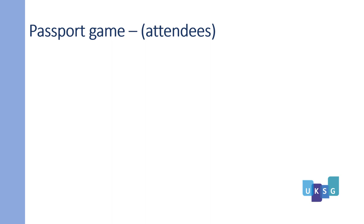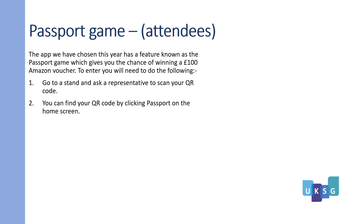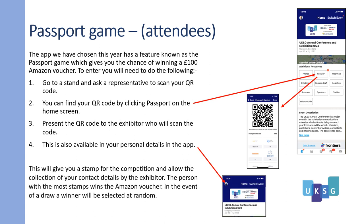How attendees play the passport game. The app we have chosen this year has a feature known as the passport game, which gives you the chance of winning a £100 Amazon voucher. To enter, go to a stand and ask a representative to scan your QR code. You can find your QR code by clicking on passport on the home screen. Present the QR code to the exhibitor who will scan the code. This QR code is also available in your personal details in the app. This will give you a stamp for the competition and allow the collection of your contact details by the exhibitor. The person with the most stamps wins the Amazon voucher. In the event of a draw, a winner will be selected at random.